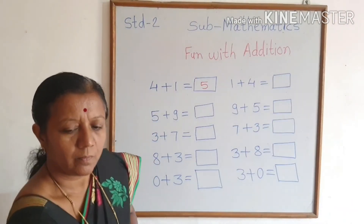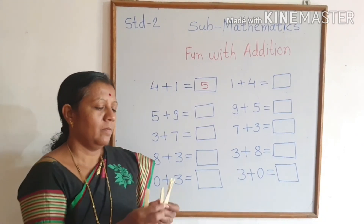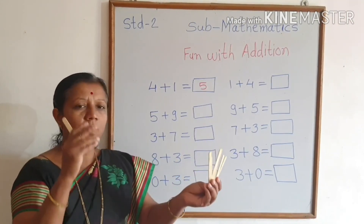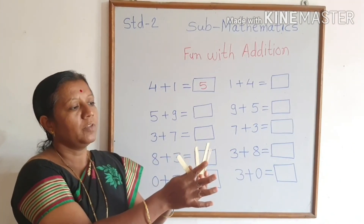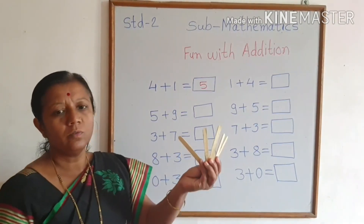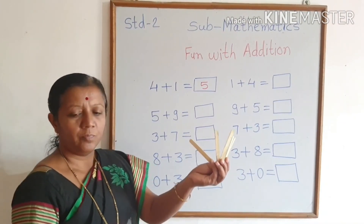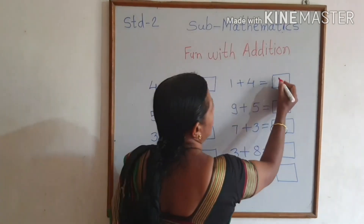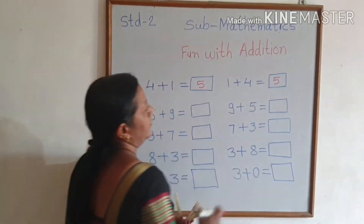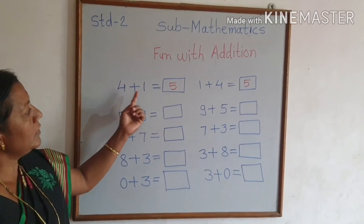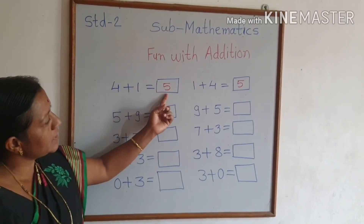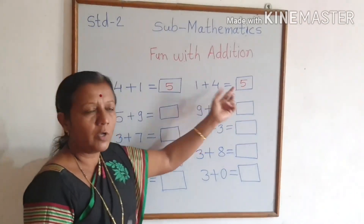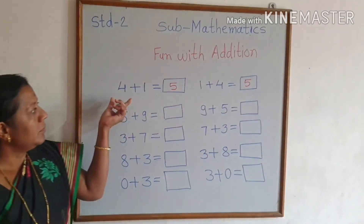1, 2, 3, 4. So 1 plus 4 is equal to 5. Right? Number 5: 4 plus 1 is equal to 5 and 1 plus 4 is equal to 5.